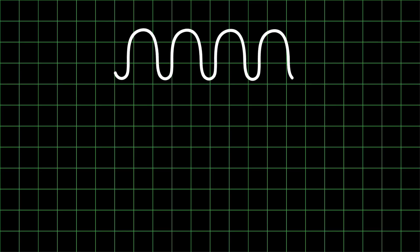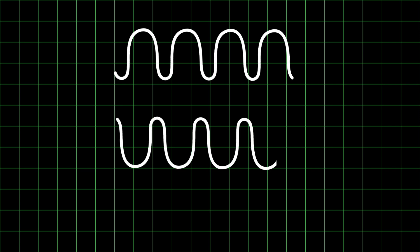The goal would be to choreograph things so that all of the different paths leading to a wrong answer would be out of phase — some would have positive amplitudes, others would have negative amplitudes — and so they would cancel each other out.